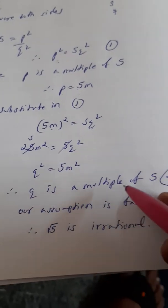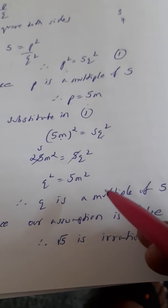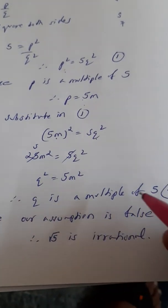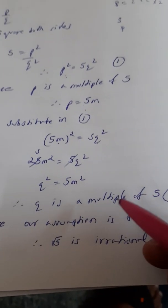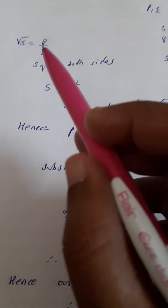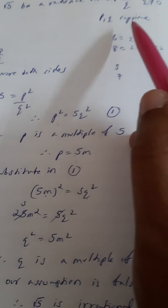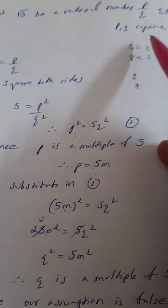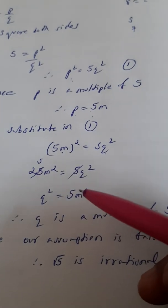So what is the contradiction here? Here we are saying p is a multiple of 5, q is also a multiple of 5. That means our assumption is false, because we had assumed in the beginning that p and q are which type of numbers? Co-prime numbers. That means they do not have any common factor.